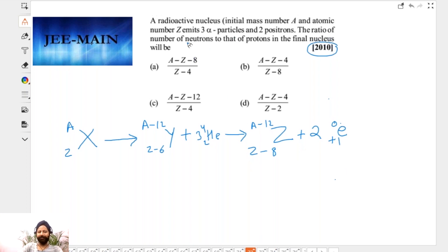Okay, so now they're saying what is the ratio of number of neutrons to number of protons. So that's the ratio of number of neutrons, which is A minus 12 minus (Z minus 8). So this will be A minus Z minus 4, and this is Z minus 8. So correct option is B and that is what most of the students were actually saying.